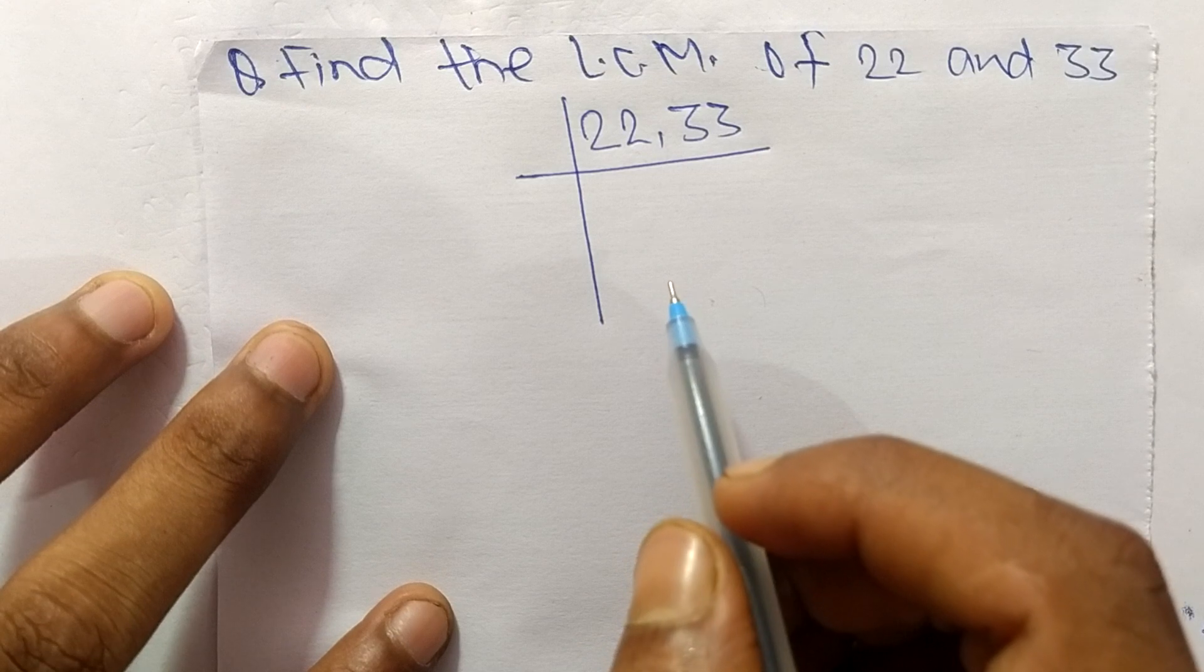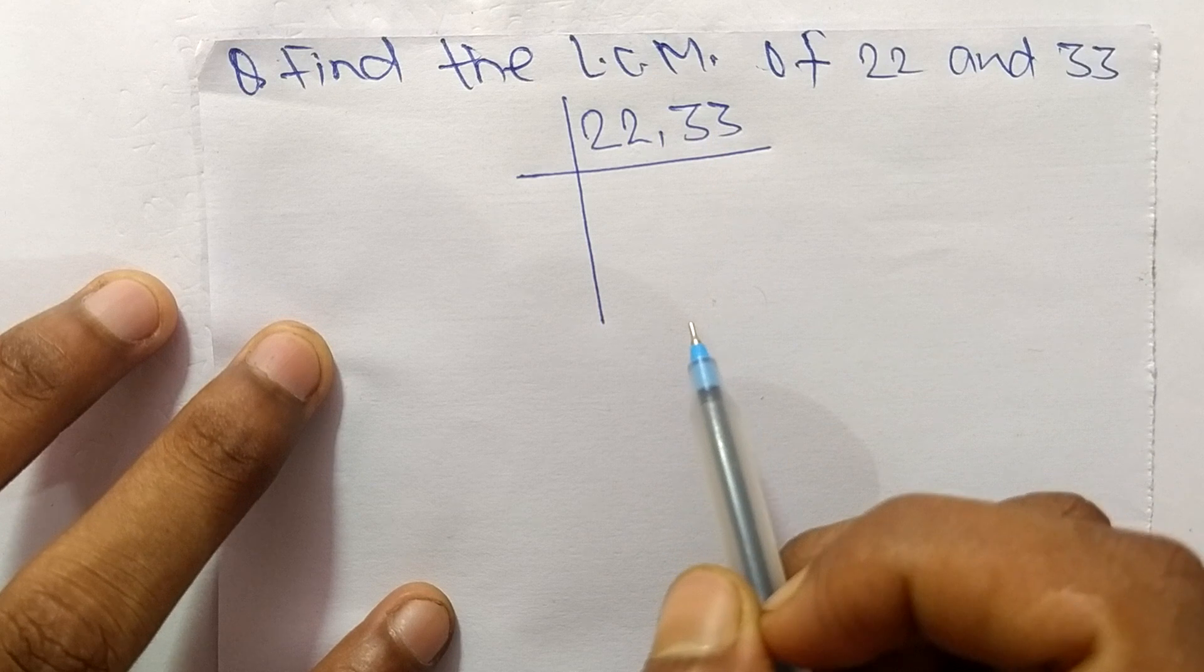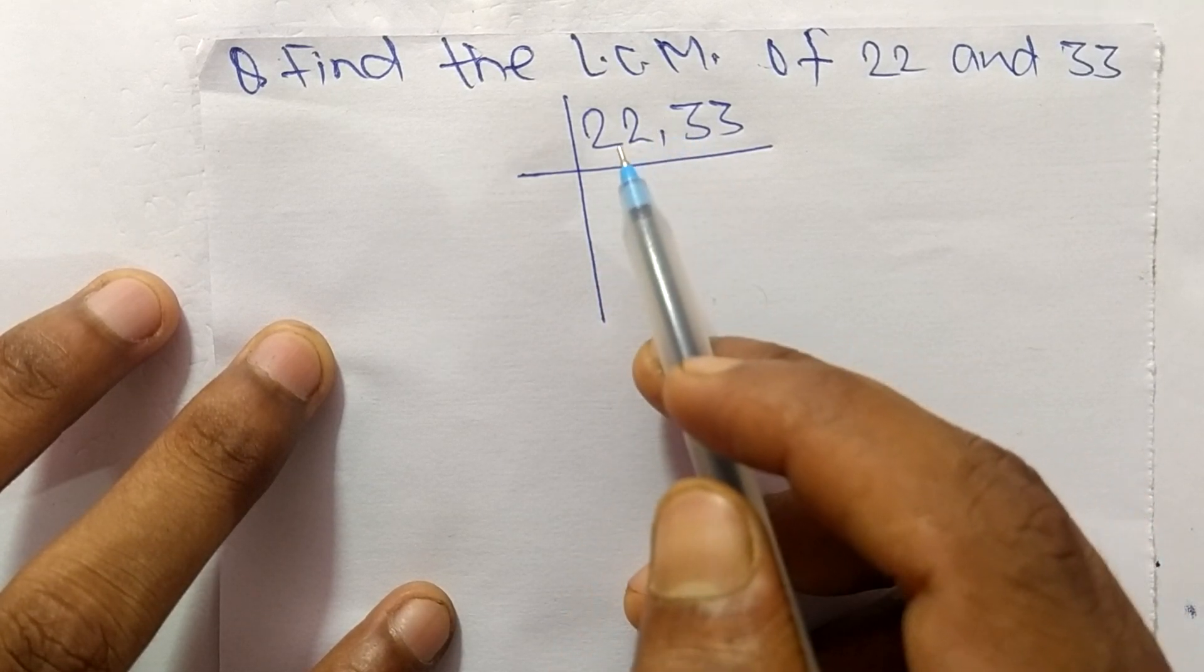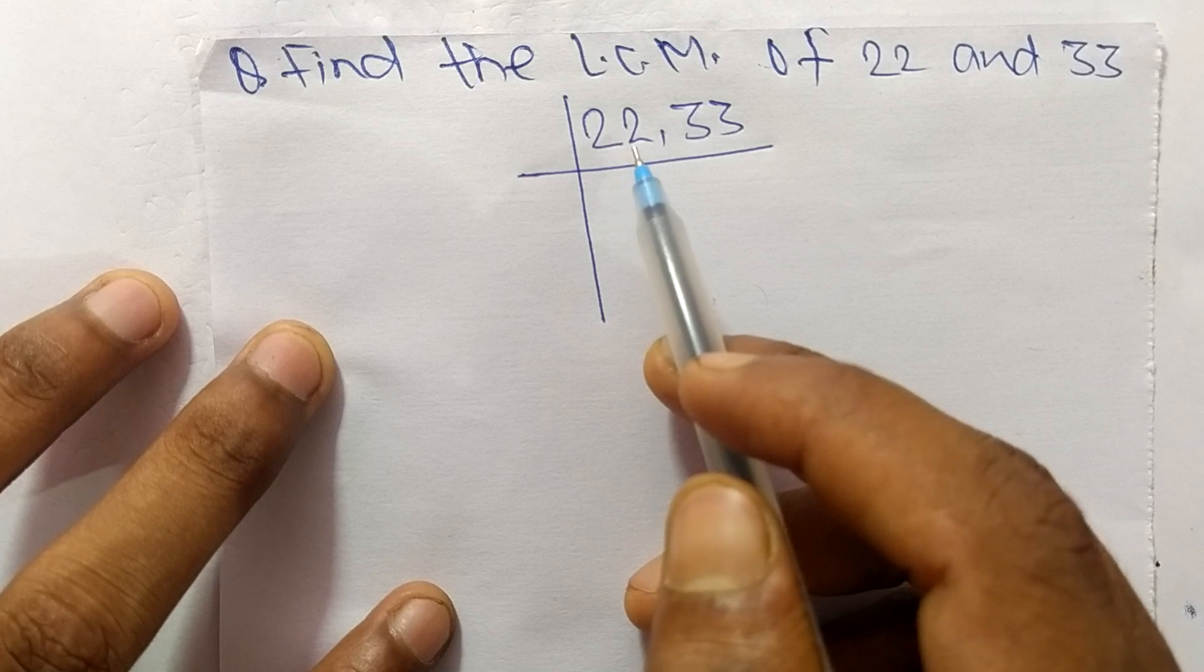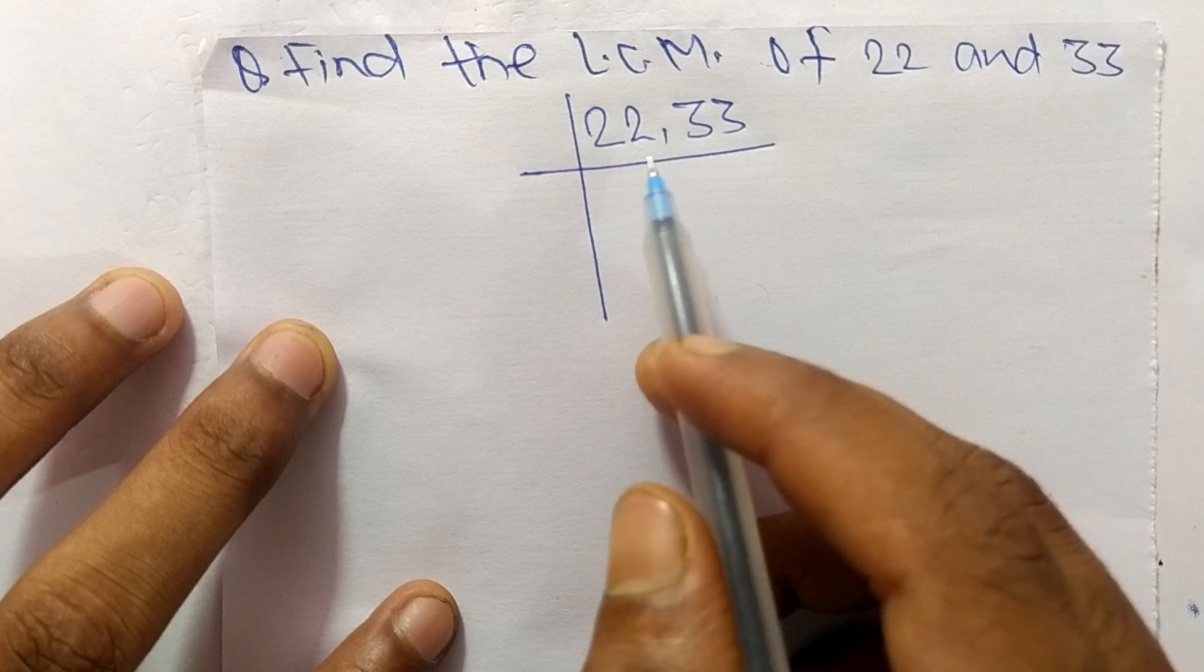When we take here 2, the 2 can divide exactly 22 but can't divide 33. So when we take the number 3, then 3 can exactly divide 33 but can't exactly divide 22.